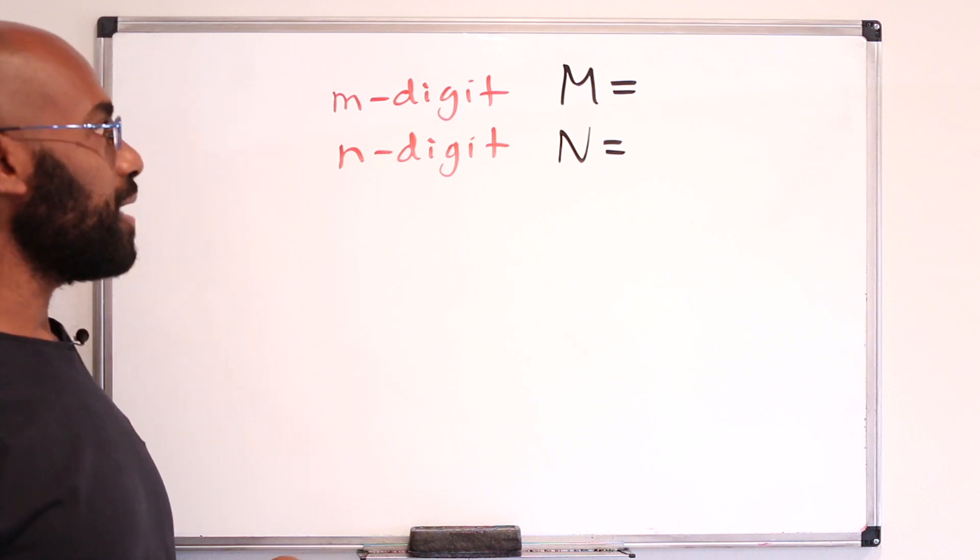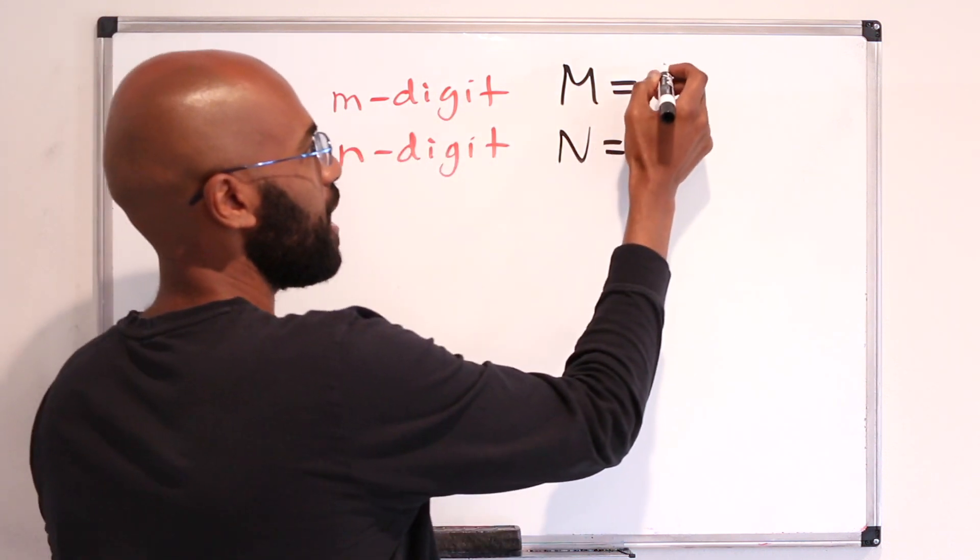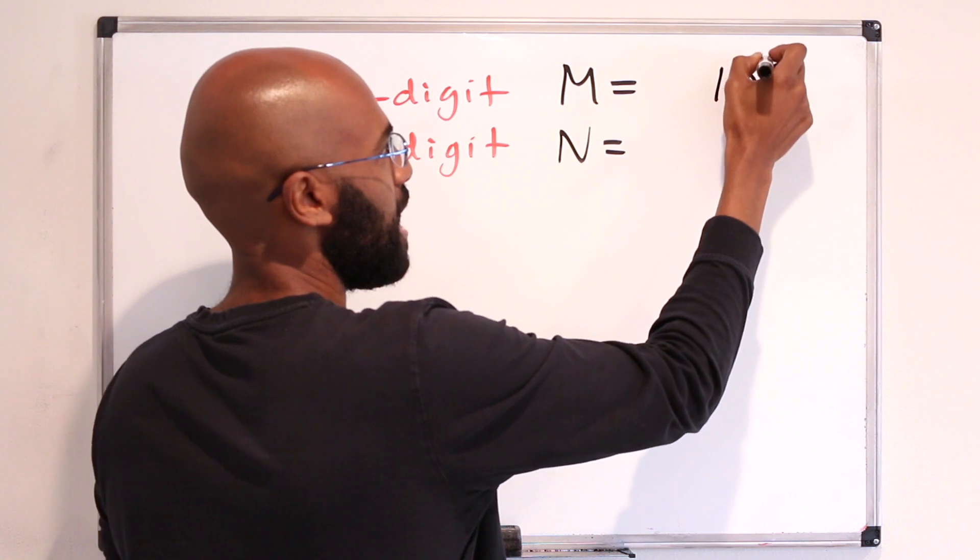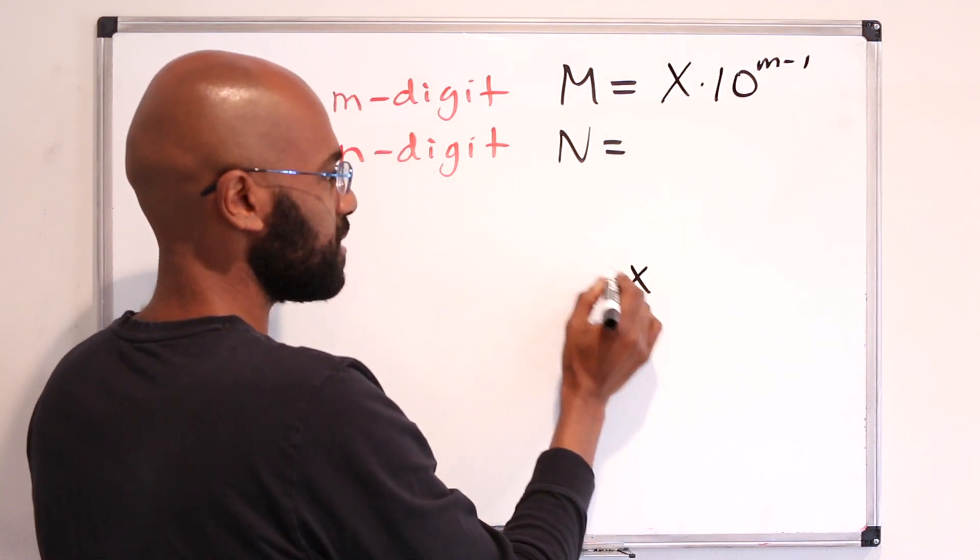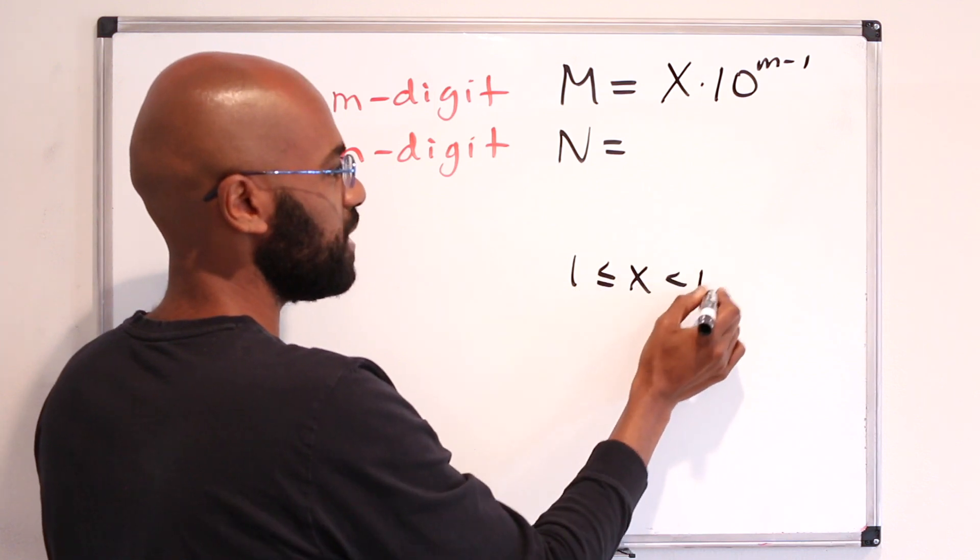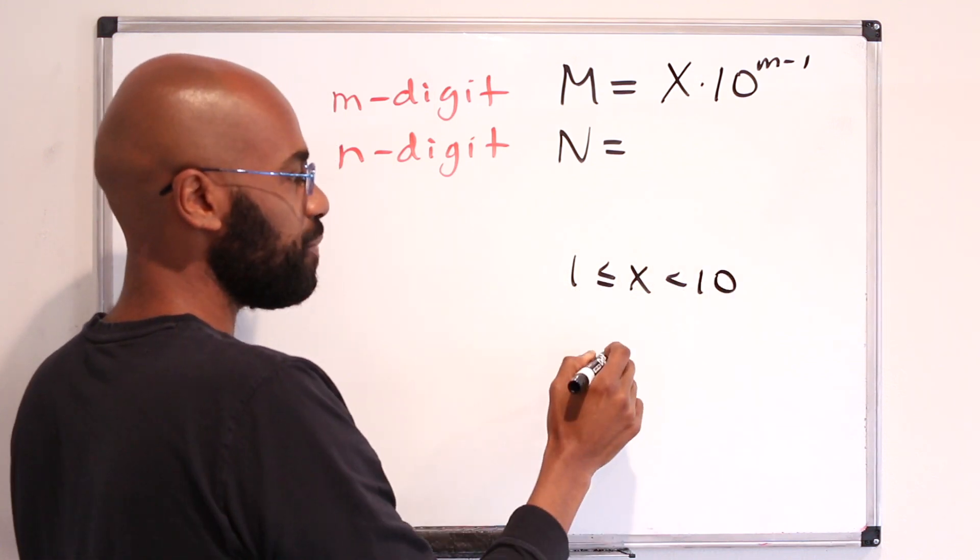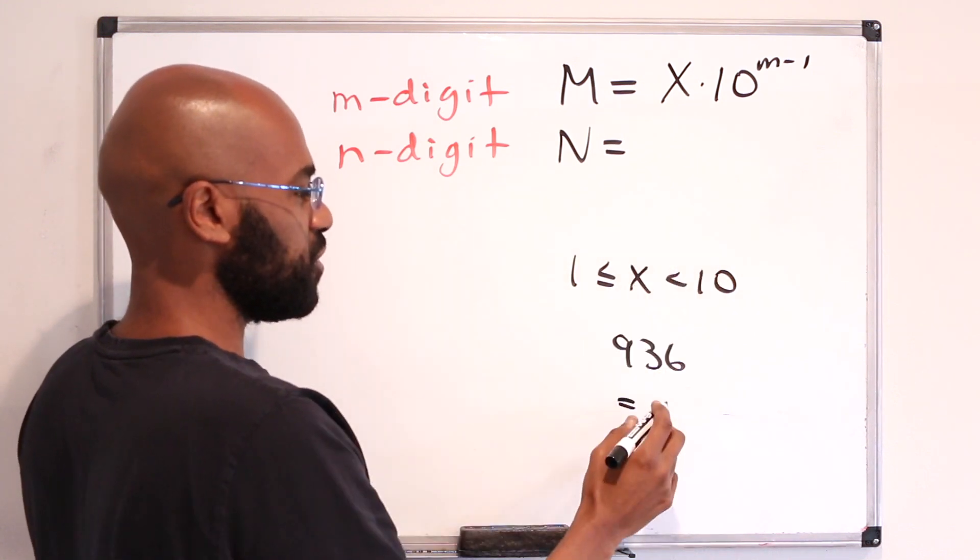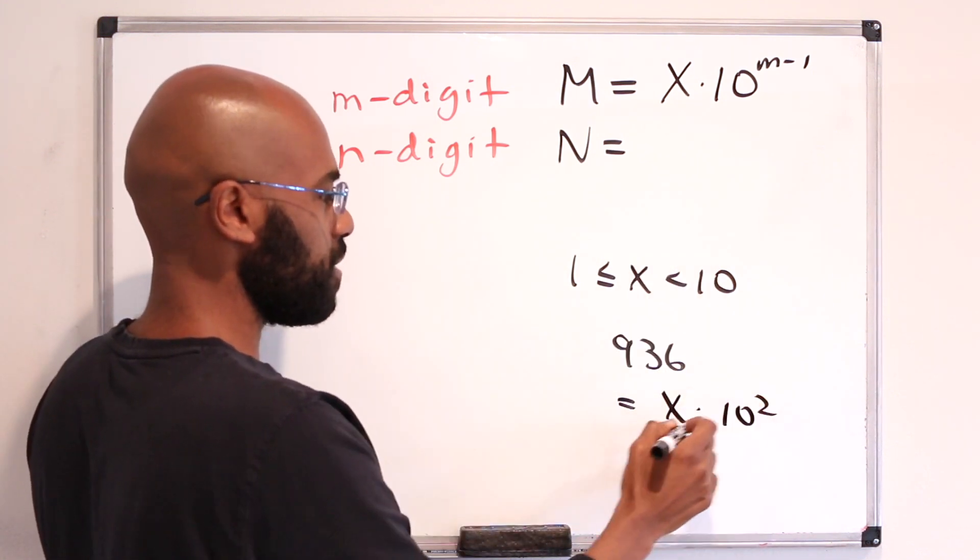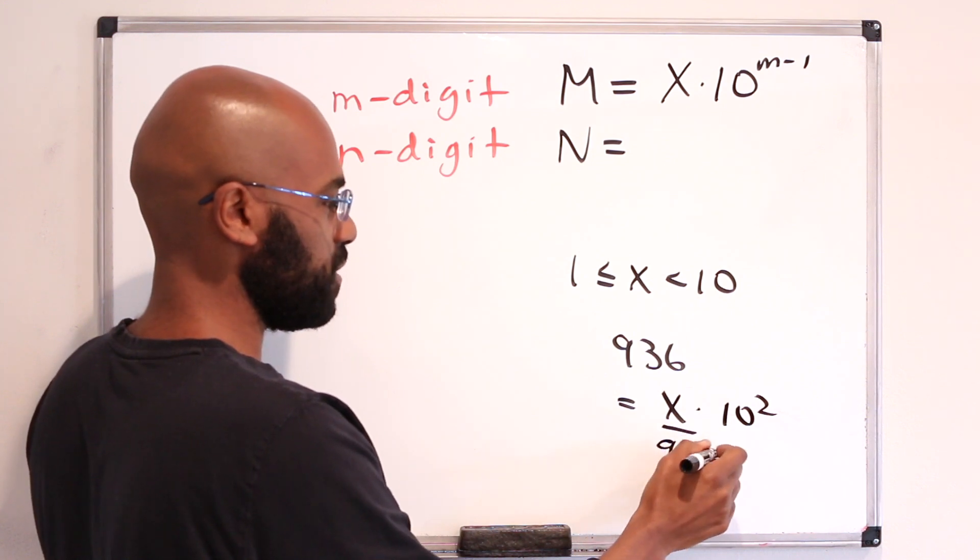A way to start thinking about this is if M is an m-digit number, we can write it as 10 to the m minus 1 times a number x, where x is between 1 and strictly less than 10. For example, if m was 936, it's a three-digit number, so we can write it as x times 10 squared, where x is 9.36.